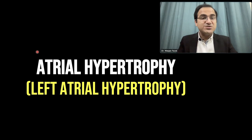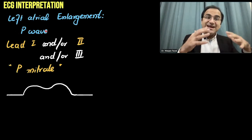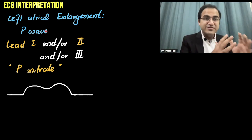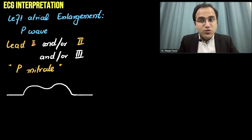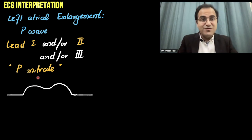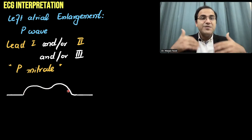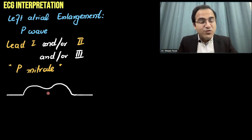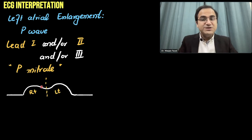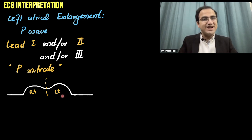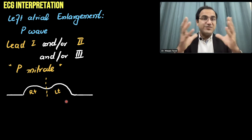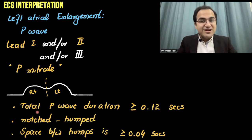Now I will discuss left atrial enlargement. Since it is an atrial enlargement, there will be changes in the P wave because the P wave shows atrial contraction. In leads 1, 2, and/or 3, you will see P mitrale — the classical P wave for left atrial enlargement. In P mitrale, you will see a double-humped P wave in which the first hump shows right atrial depolarization and the second hump shows left atrial depolarization. The total P wave duration will be greater than or equal to 0.12 seconds.